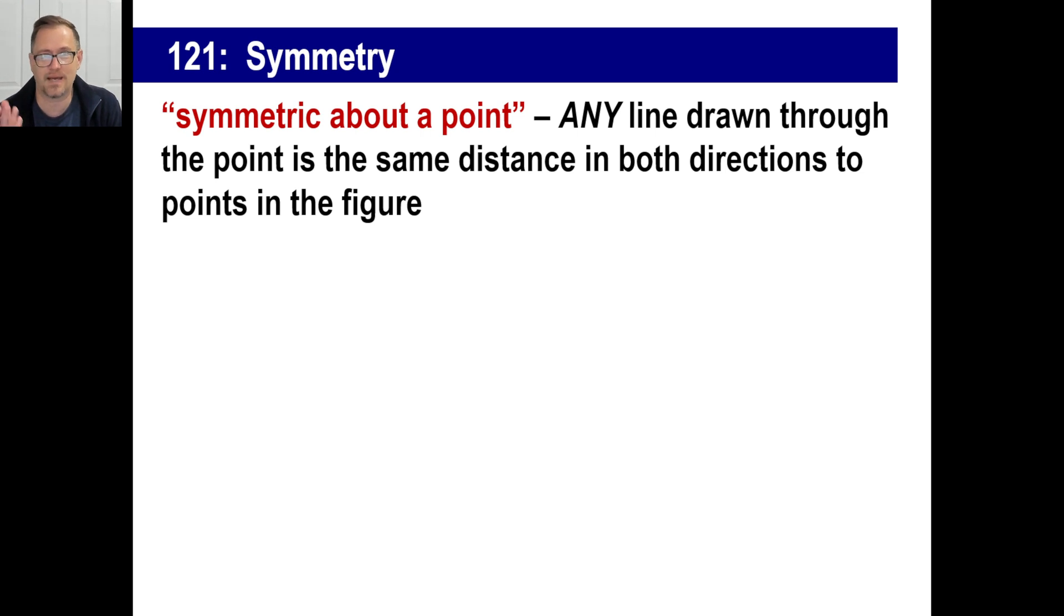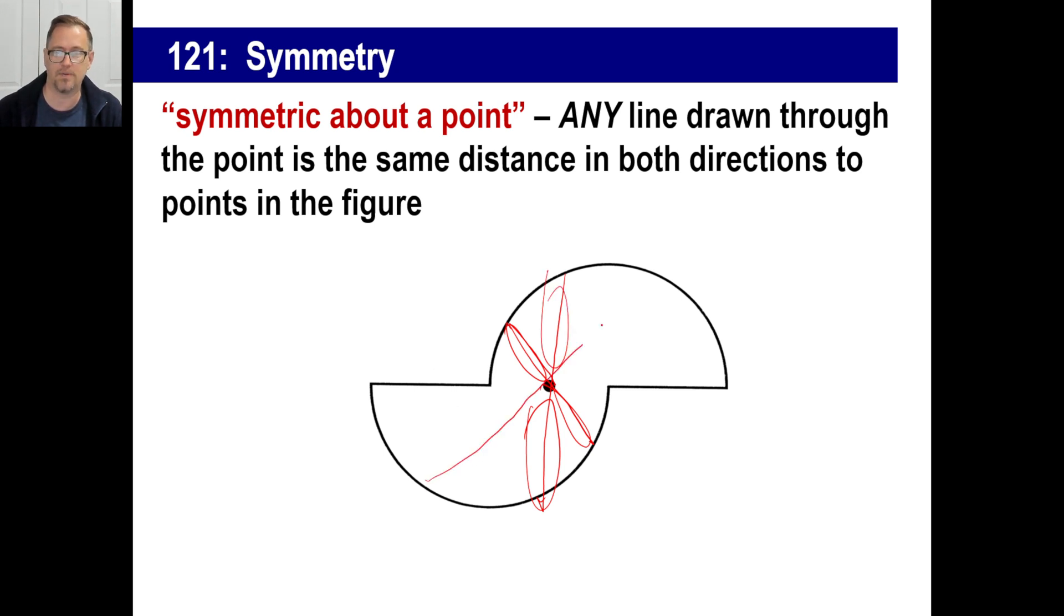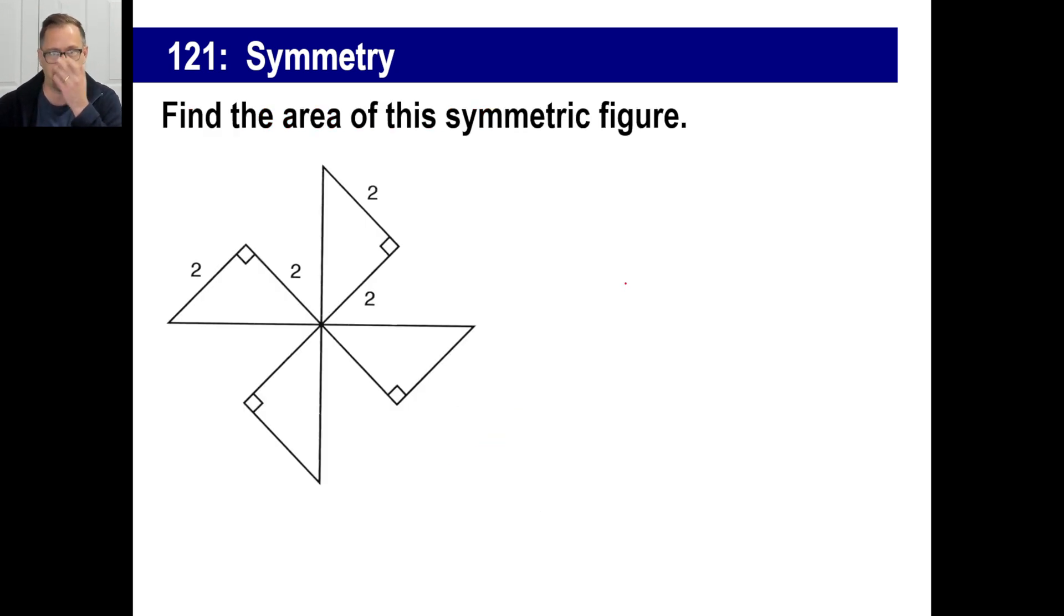Now, there is a different kind of symmetry, which they call symmetric about a point. And there's around the point. So, this is any line drawn through the point is the same distance in both directions to a point in the figure. So, if you have something like this, and in fact, you can go ahead and open your book if you want to. There is a picture of this on page 384. You could draw a line through this point like that. And this here length will be the same as this length here. You could draw it from here to here as well. And this length here would be the same length here. You could go from here to here, and so on. That's symmetric about a point.